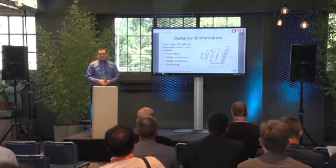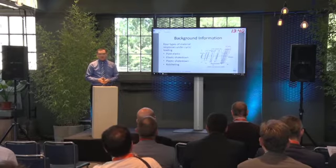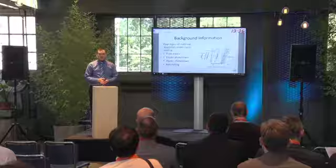In an actual rail-wheel rolling contact process, the rail is subjected to cyclic loading and the rail surface is subjected to repeated rolling and sliding loading with high contact stresses. For materials subjected to cyclic loading conditions, the material response can be categorized into four different types: pure elastic, elastic shakedown, plastic shakedown, and ratcheting.